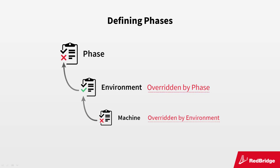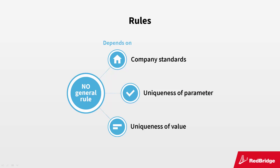Parameters can be defined on phase, environment, or machine level. The phase parameter takes precedence over the environment parameter, which in turn takes precedence over the machine parameter. There is no general rule to determine on which level you should define the parameters — it depends on your company standards, how unique the parameter is, whether it's used in one or several phases, and how unique the parameter value is. If the value is the same for all environments, you probably want to define it globally on the phase level.